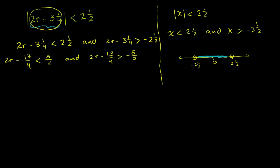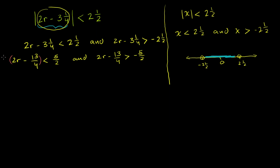Now let's solve each of these independently. To get rid of the fractions, multiply both sides by 4. That gives us: 4 times 2r is 8r; 4 times negative 13 fourths is negative 13. Since we multiplied by a positive number, the inequality doesn't swap. 5 halves times 4 is 10. So we get 8r minus 13 is less than 10. Now add 13 to both sides to get rid of it on the left-hand side.